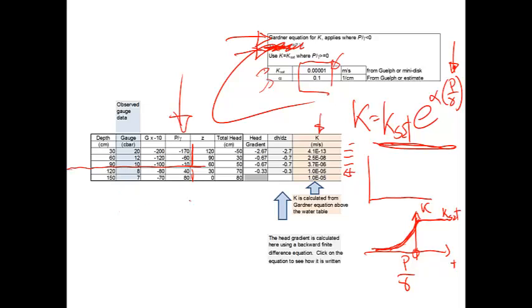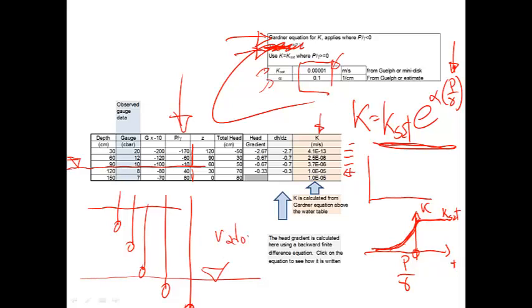So, what that means is that there's a water table right in here between these two depths. And it's going to be closer to 90 than to 120. So, we could interpolate, perhaps, and get an estimate for where the water table is. So, this is kind of cool because what it means is that we've used these tensiometers to monitor both the vadose zone and the saturated zone. So, if we have five tensiometers like this, then it means that there's a water table that occurs right in here, like that. So, this is the vadose, and this is saturated.